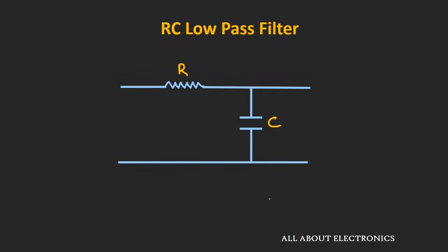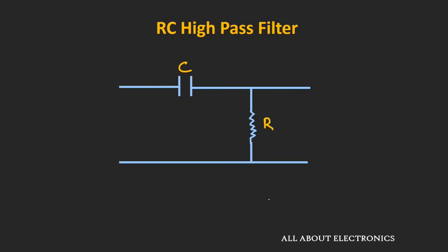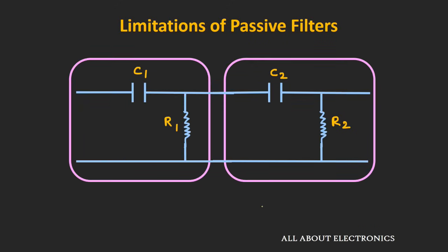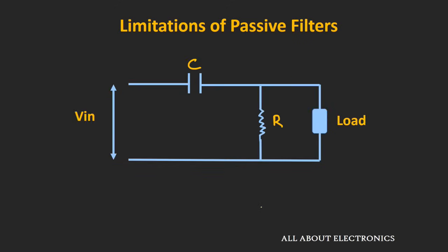In the last couple of videos, we had seen that how by just using the resistor and capacitor, we can design the passive RC low pass and the high pass filters. But these passive filters have some limitations. The first limitation is that the output of this passive filter will be always less than the input signal. And when you cascade many of such filters to design the higher order filter, the output will be even much lesser than the input.